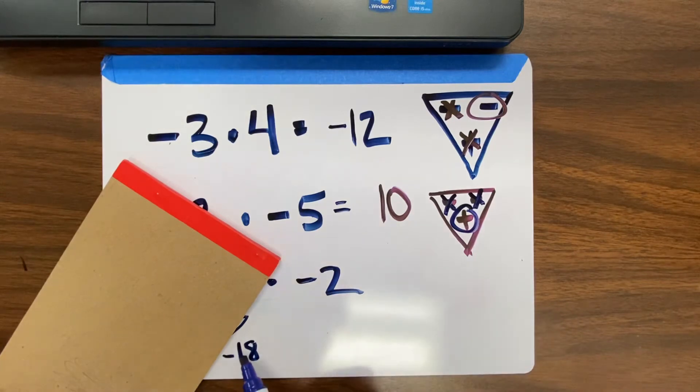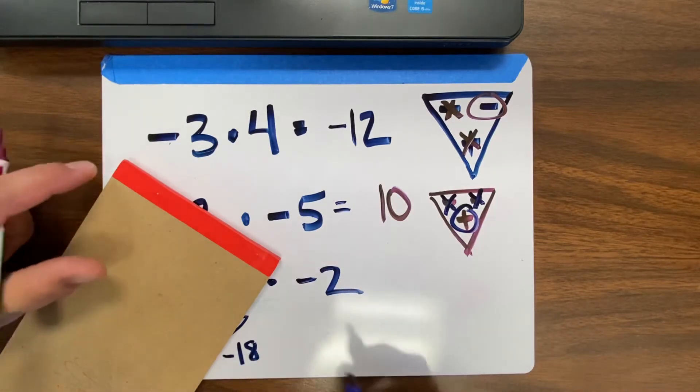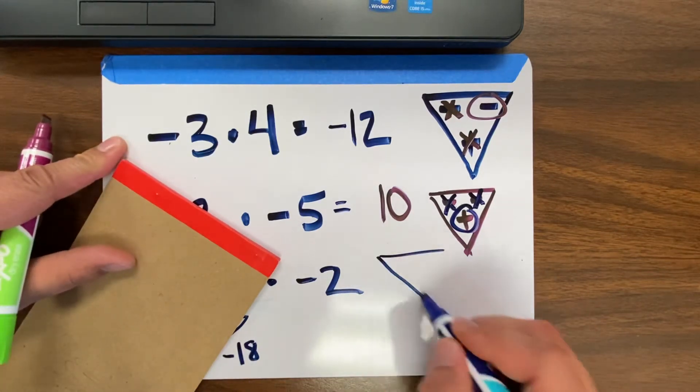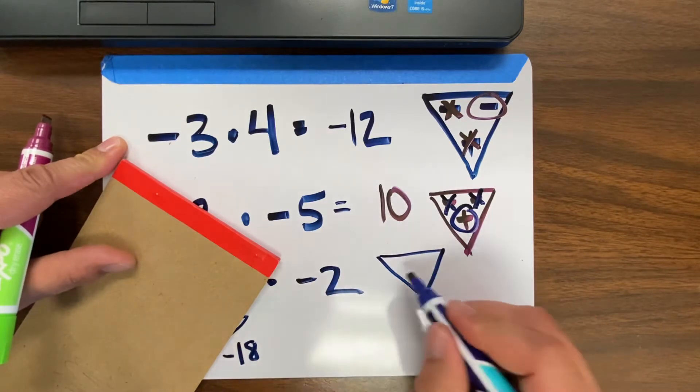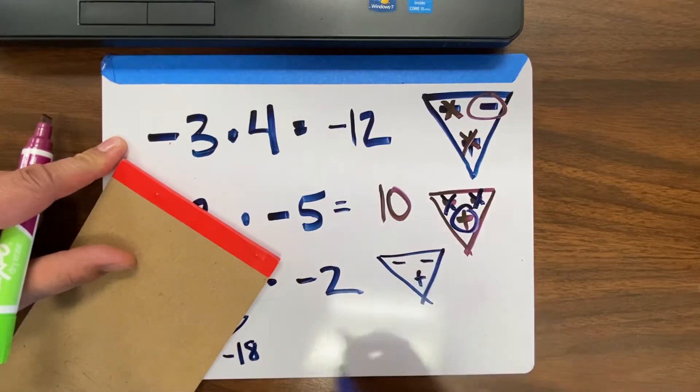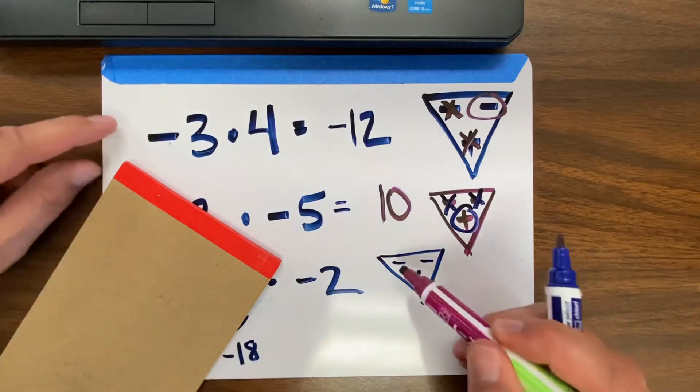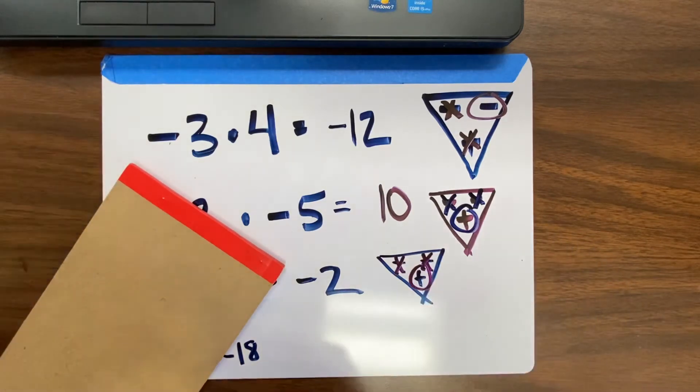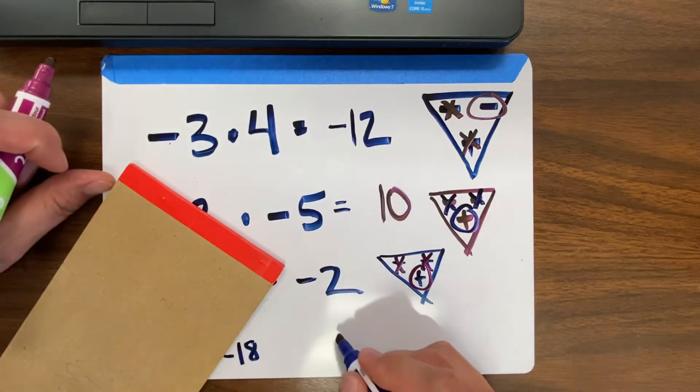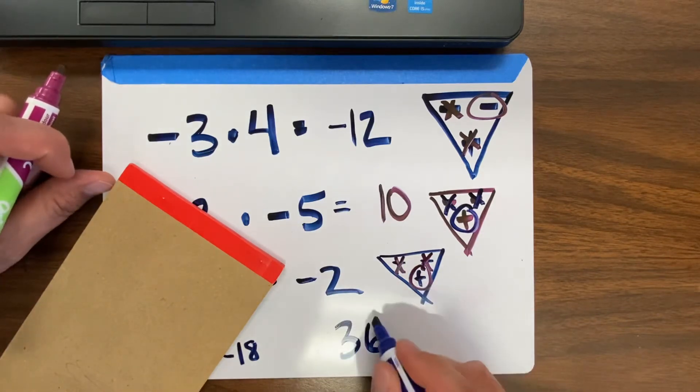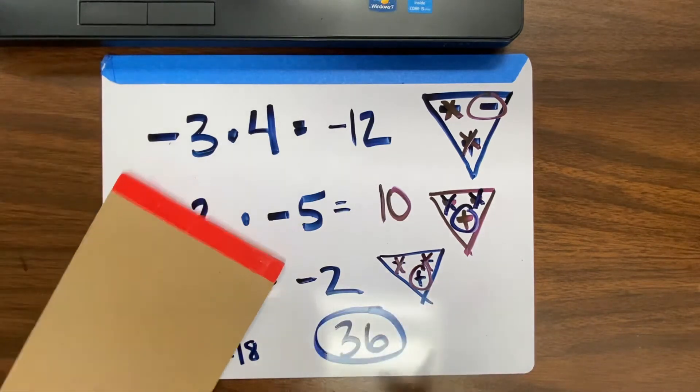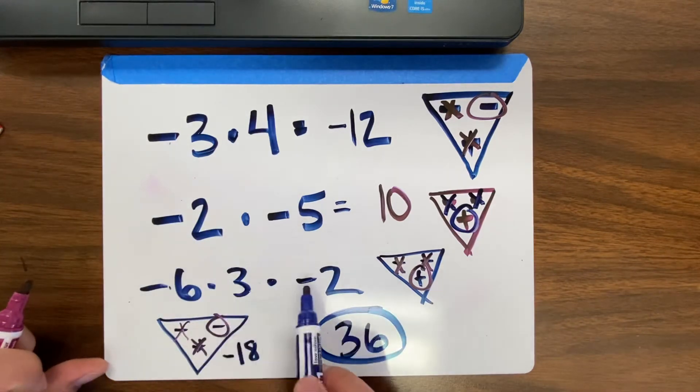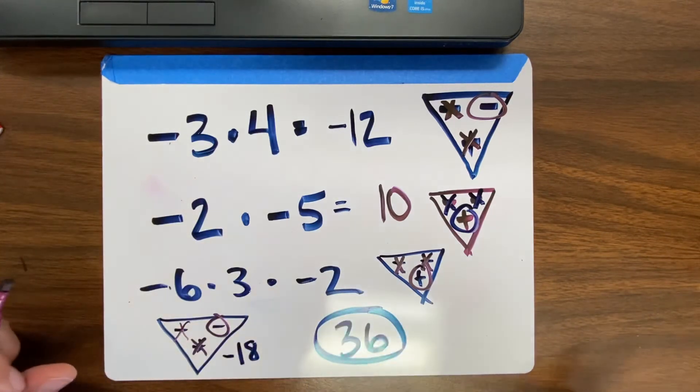And now it's just asking me what's negative 18 times negative 2. So again, I can use the triangle because I have just two terms. Negative, negative, positive. This says negative 18. This says negative 2. So I'm left with positive. 2 times 18 is 36, and it's positive. So that would be the answer. Negative 6 times 3 times negative 2 is positive 36.